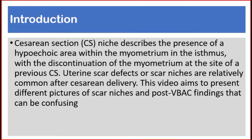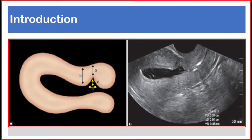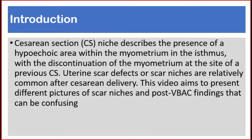Introduction. Caesarean section niche describes the presence of a hypoechoic area within the myometrium in the isthmus, with the discontinuation of the myometrium at the site of the previous caesarean section. Uterine scar defects or scar niches are relatively common after caesarean delivery.